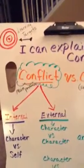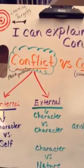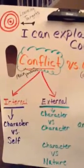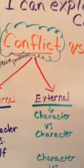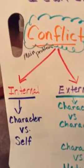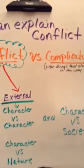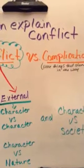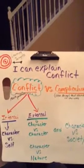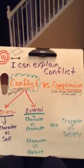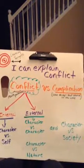Hopefully you can now explain the difference between a conflict and a complication, and determine between internal versus external conflict. For testing purposes, you're responsible for knowing the difference between internal and external conflict. There's only one type of internal conflict, but we have three main types of external conflicts. I hope this video was helpful in learning the difference between conflicts and complications, and in determining the types of conflict. Next time we will talk about characters and how we analyze and evaluate our characters in our stories. Thanks for watching!